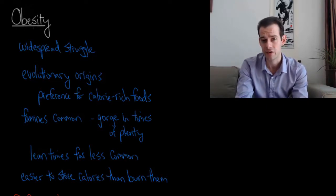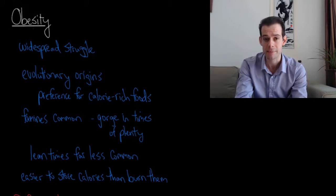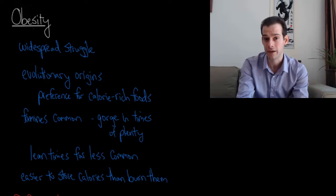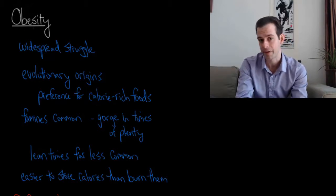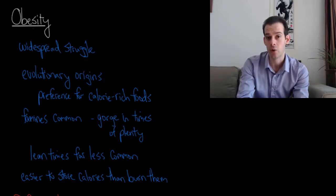Universally, people seem to have a preference for calorie-rich foods. If we think in evolutionary terms, this makes sense because in our past famines were common. People often didn't have enough food, so it makes sense to crave those foods that have the most calories so you can store more energy in advance. This would create a tendency to gorge in times of plenty. When you have lots of food available, you should eat as much as you can so that when the famine comes three months later you're able to survive.